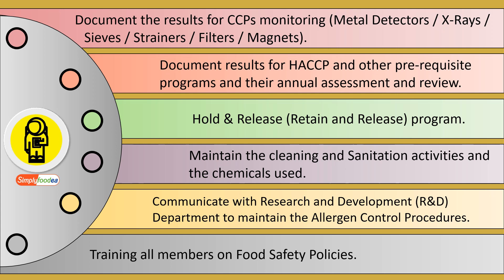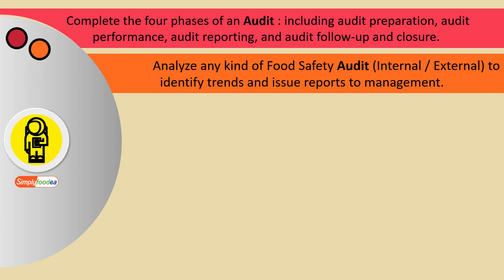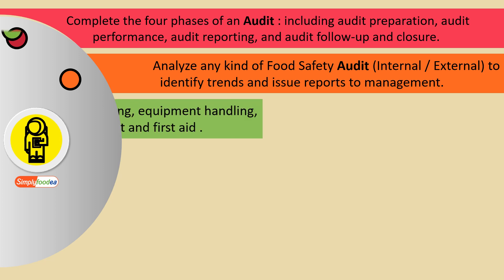There are additional jobs for the food safety inspector or specialist, including completing the four phases of an audit: audit preparation, audit performance, audit reporting, and audit follow-up and closure of findings. They also analyze any kind of food safety audit — whether internal or external, such as third-party audits — to identify trends and issue reports to management or the direct supervisor.